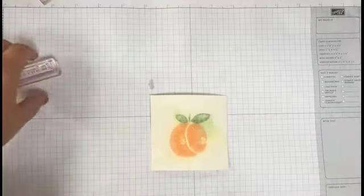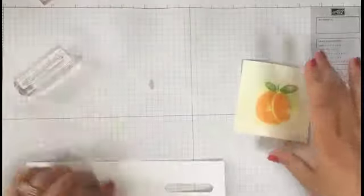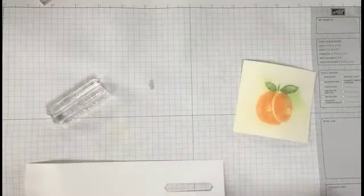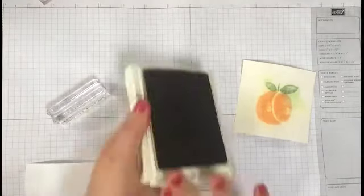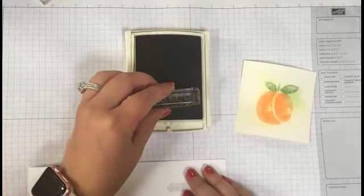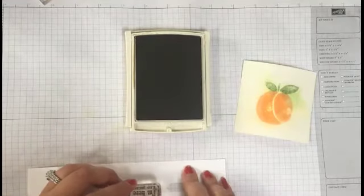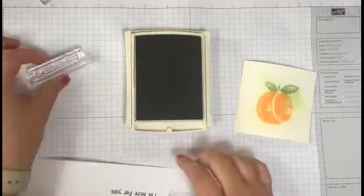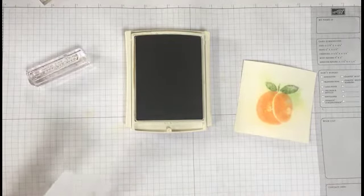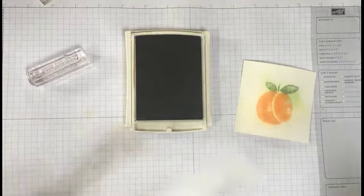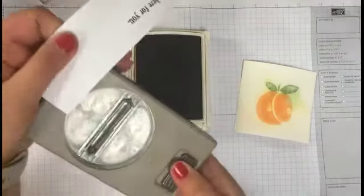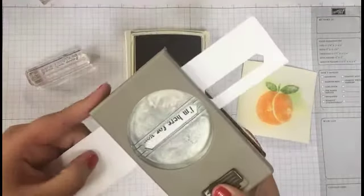My scrap card, and then the next thing to do is just stamp out my sentiment. I'm going to use Soft Suede and the 'I'm here for you.' They've cut it with a little banner and you could do that yourself if you wanted to, but I like punching out because it's much quicker. So I'm going to use my new label punch.